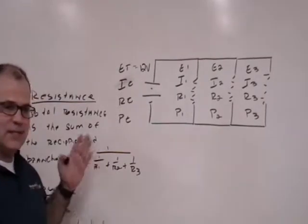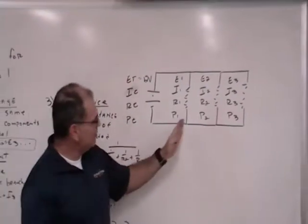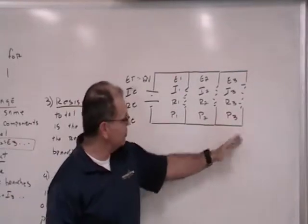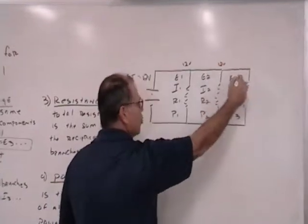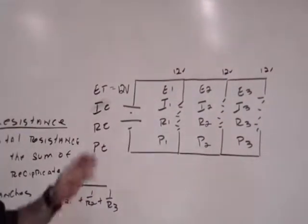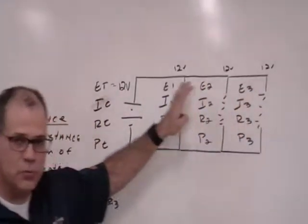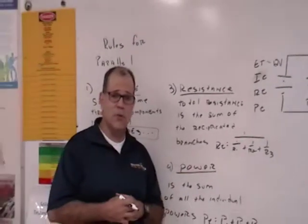Since the rule says that in parallel voltage stays the same across all the components, that means that across each one of these resistors, our voltage is going to be 12 volts across each one. That's the first rule. The first rule in parallel for voltage is that it stays the same throughout all the components.